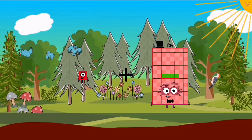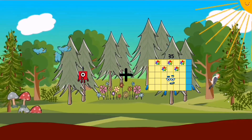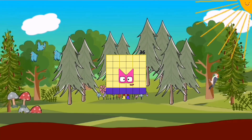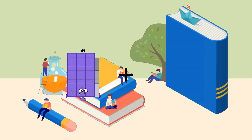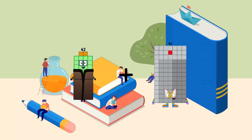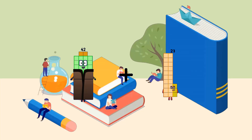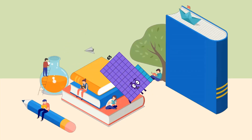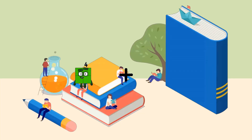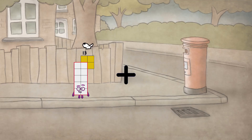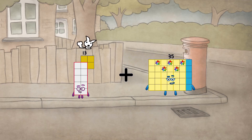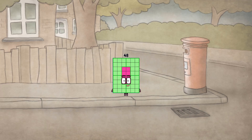1 plus 35 equals 36. 42 plus 23 equals 65. 13 plus 35 equals 48.